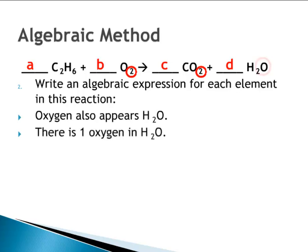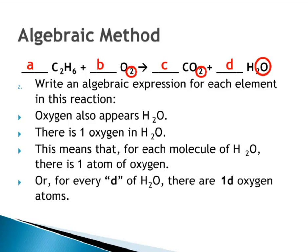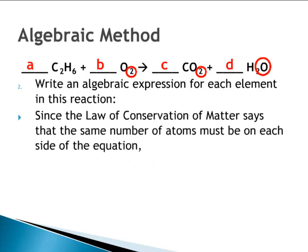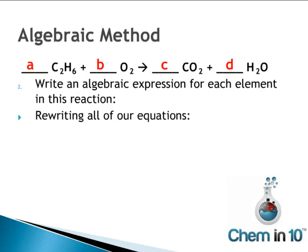Oxygen also appears in H2O — there is one oxygen in H2O, so for every coefficient D of H2O there are D oxygen atoms. Since the number of oxygen atoms must be the same on both sides, 2B equals 2C plus D. Our three algebraic expressions are: 2A equals C, 6A equals 2D, and 2B equals 2C plus D.